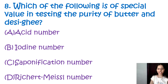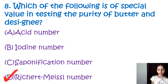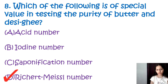Question number 8: Which of the following is of special value in testing the purity of butter and desi ghee? Options are acid number, iodine number, saponification number, and Reichert-Meissl number. The correct option is D, Reichert-Meissl number. It is a special value in testing the purity of butter and desi ghee, and it indicates how much volatile fatty acid can be extracted from the fat through saponification.